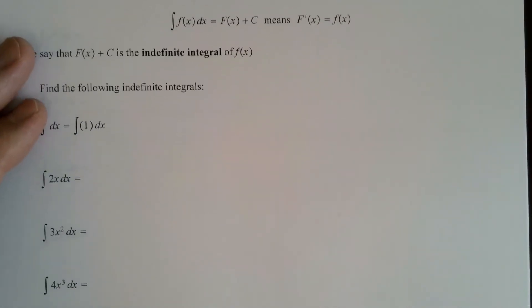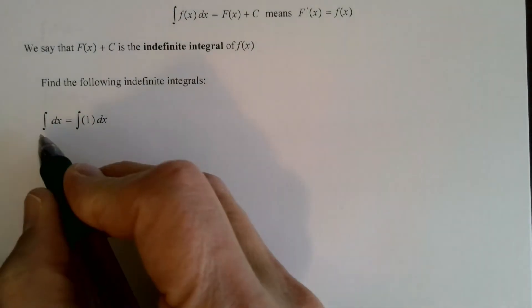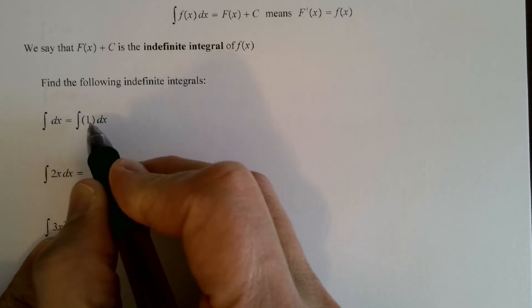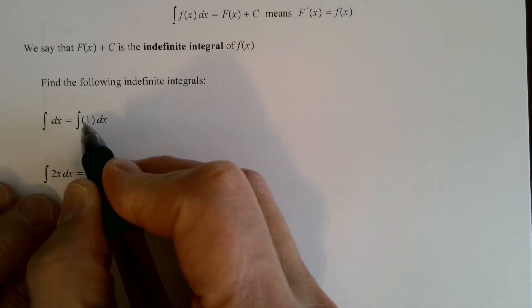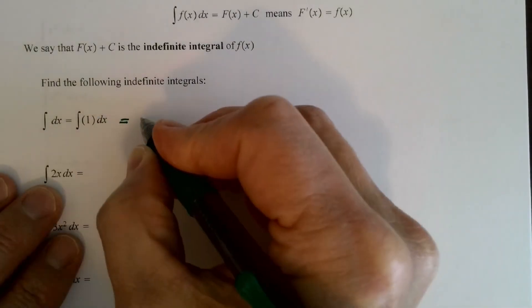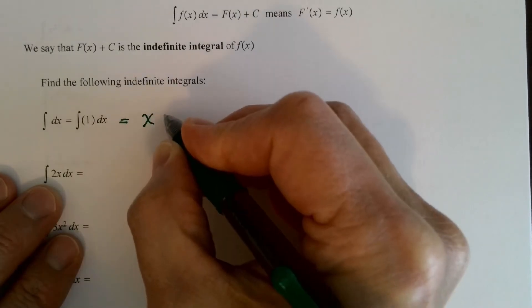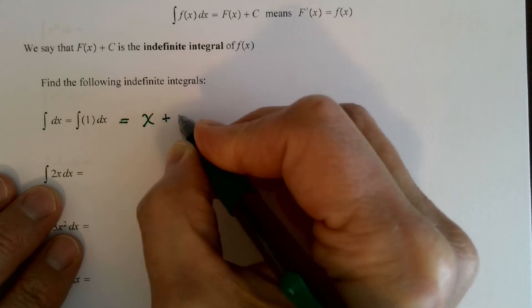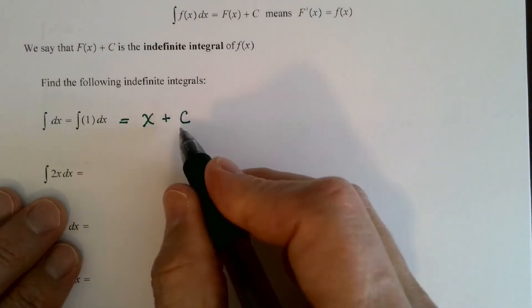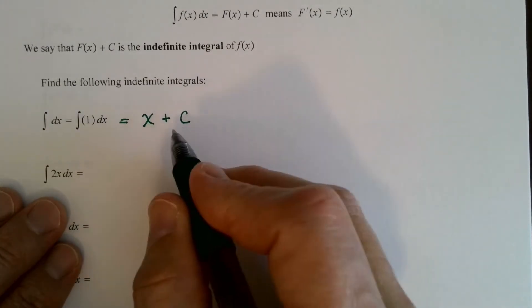Let's find some indefinite integrals. The integral of dx — if there's nothing there, we assume the function is 1. What's the anti-derivative of 1? Which function do I differentiate to get 1? Obviously x. But when we do this, we add the constant of integration. So it's not just x, but it could be x plus 1, x minus 5, x plus pi, and so on.